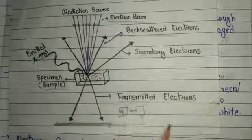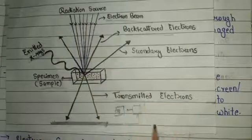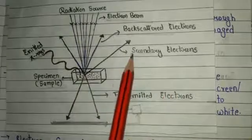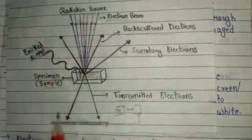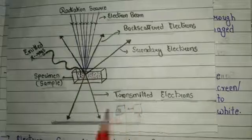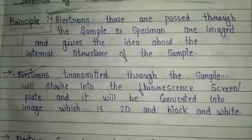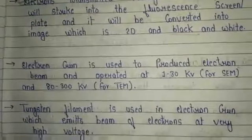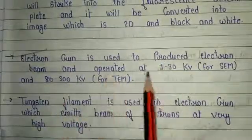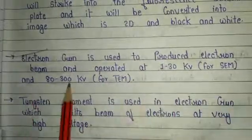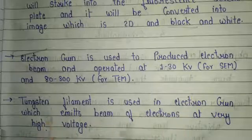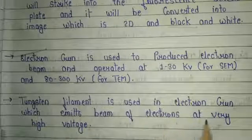So this is the basic principle of transmission electron microscopy — in SEM we get the image using secondary, backscatter, and X-ray signals, while in TEM we get the image using transmitted electrons. Some important points of instrumentation: an electron gun is used to produce the electron beam and operates at 1 to 30 kilowatts for SEM and 80 to 300 kilowatts for TEM. A tungsten filament is used in the electron gun, which emits a beam of electrons at very high voltage.